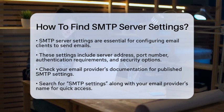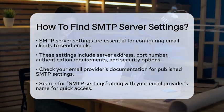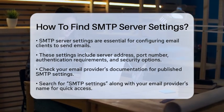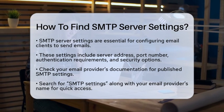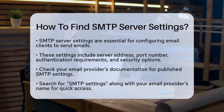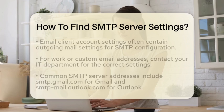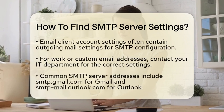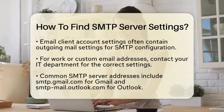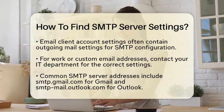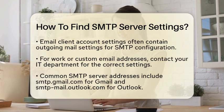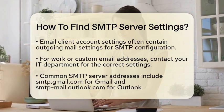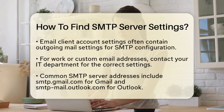To find your SMTP server settings, start by checking your email provider's documentation. Most providers, such as Gmail, Outlook, or Yahoo, have their SMTP settings published on their support websites. You can easily find this information by searching for SMTP settings along with your provider's name.